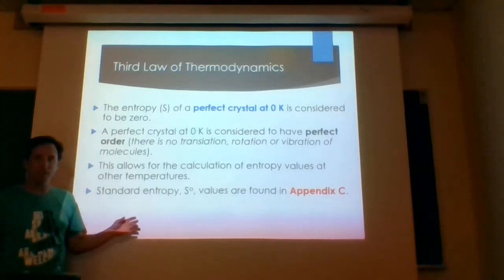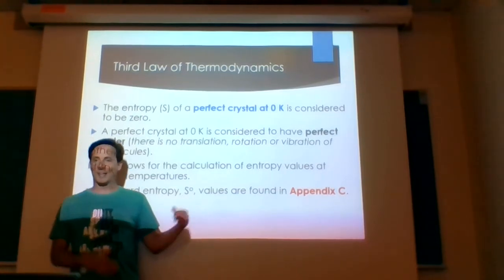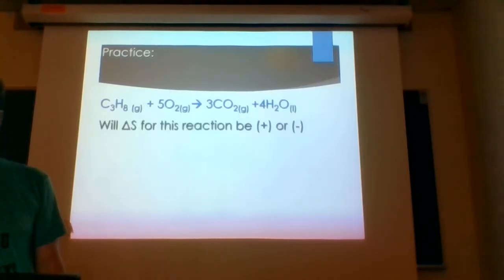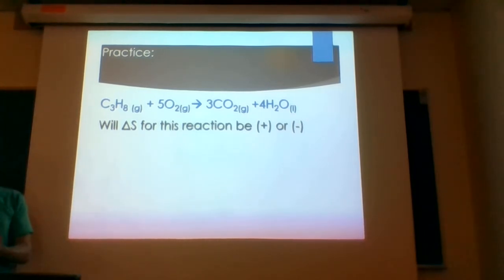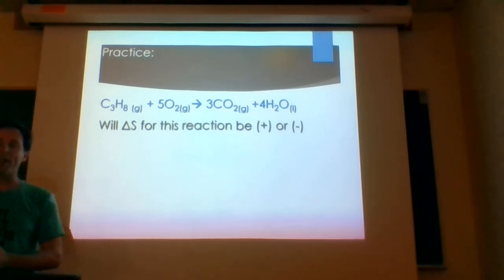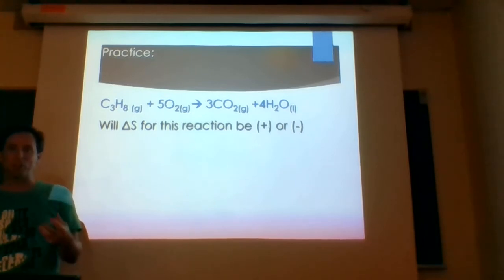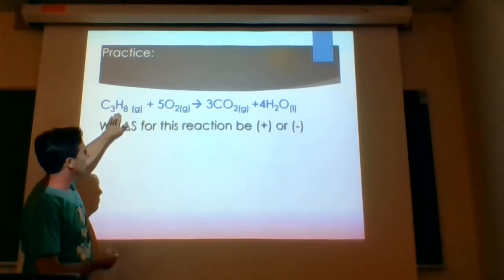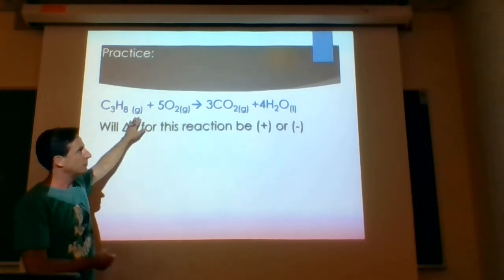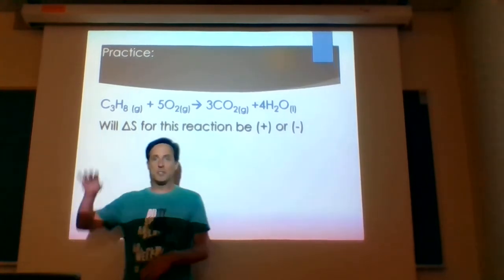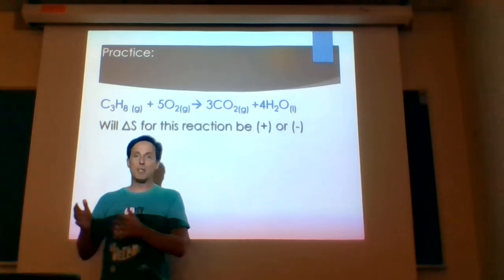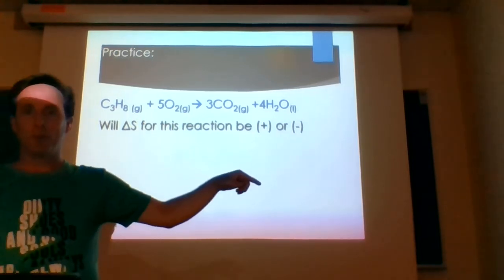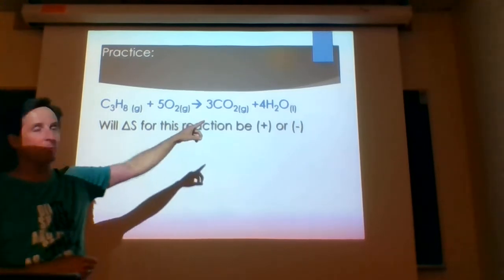Based on that reference and other calculations, we can find the entropy value for many common substances in appendix C — the same appendix we used to find delta H values. Looking at a reaction, I can predict whether it will have a positive or negative delta S. On the left side of the equation I have one plus five gaseous molecules — six total. On the right side I have three gaseous molecules. Going from six to three gaseous molecules is a significant decrease, so this reaction will have a negative delta S.